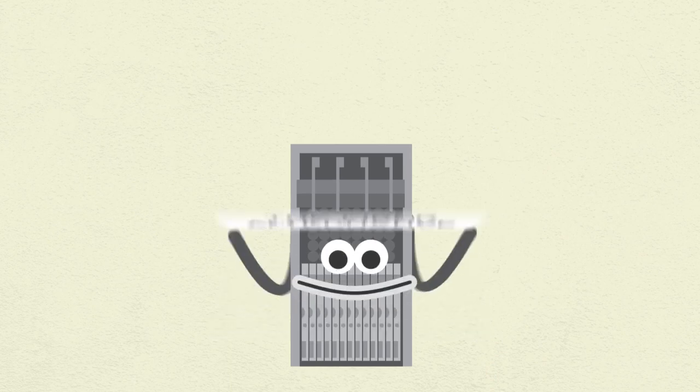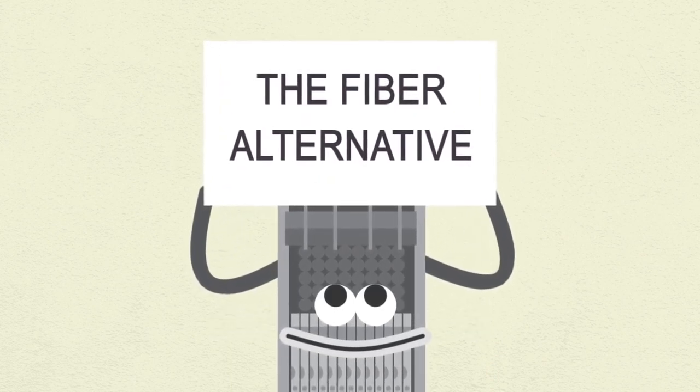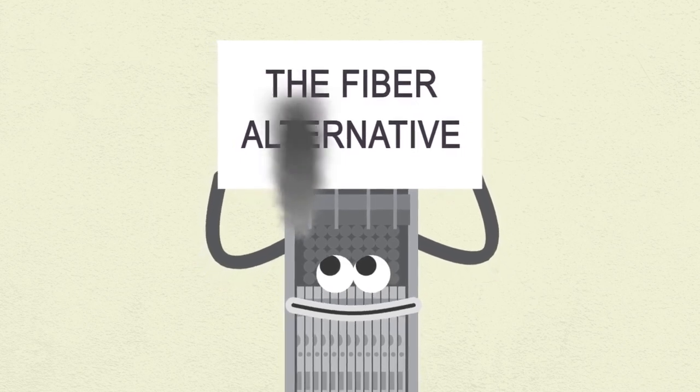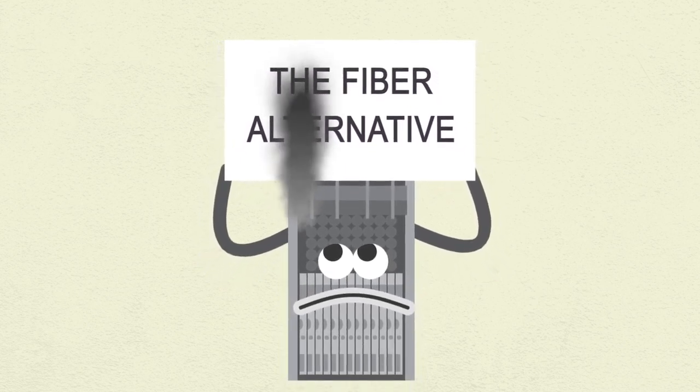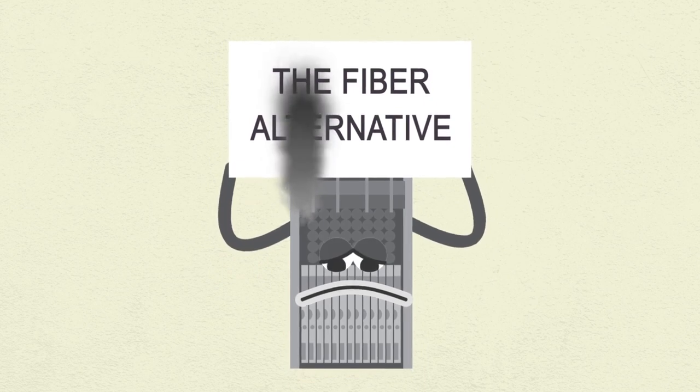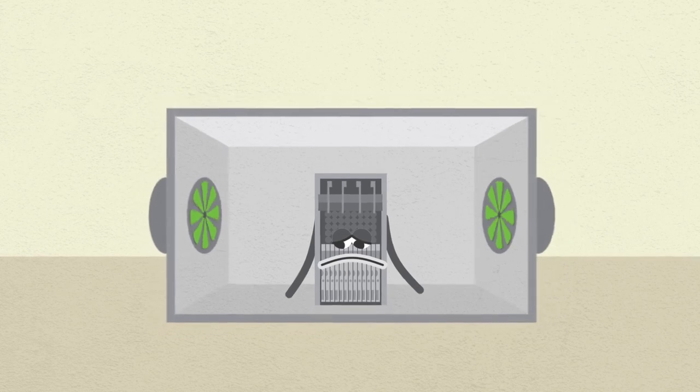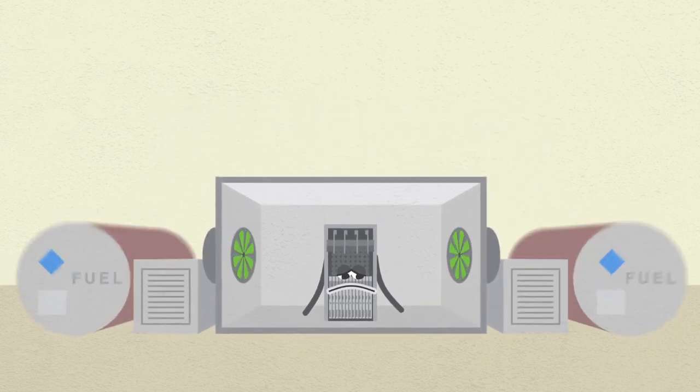Microwave trunking radios have been the fiber alternative for these long-distance links for years. However, most no longer meet capacity demands and are big and expensive, requiring shelters with air conditioning to keep them cool, which means generators and lots of fuel.